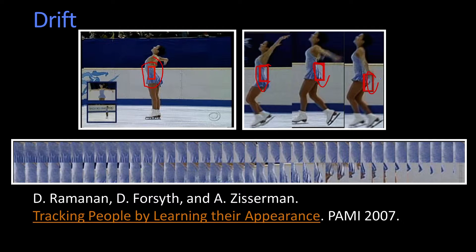And eventually the box slides down. What's not shown here is it might get stuck on the background markings in the rink. So what's happened is you keep changing, and all of a sudden more of the target model came from the rink than from the skater. So as the skater leaves, the model stays right there.